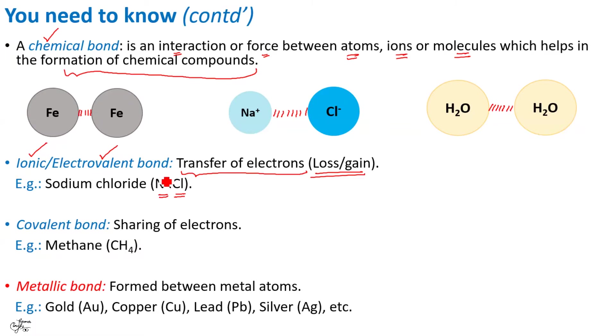A bond can also be formed by sharing of electrons. Such bonds are known as covalent bond. These bonds are formed between two non-metals. For example, carbon is a non-metal, hydrogen is a non-metal, CH4. More about it you will learn in chapter 4, carbon and its compounds.